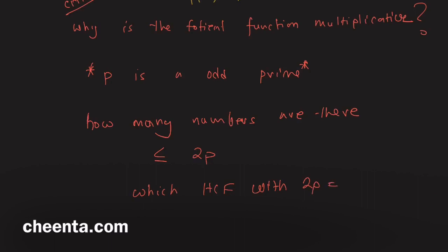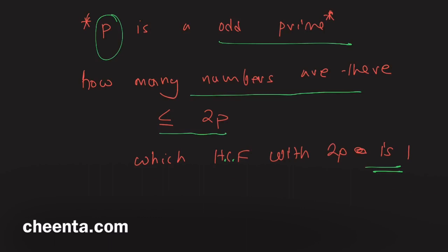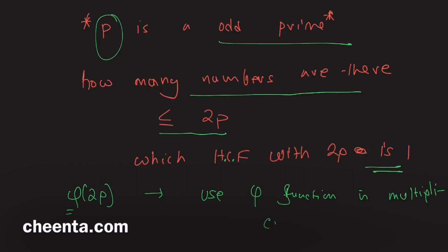The question asks: how many numbers less than or equal to 2p have HCF 1 with 2p? In other words, find φ(2p). You have to use the fact that the phi function is multiplicative. If you have the answer, post it in the comment section. Internal students should go to the Chinta classroom self-learning portal for part two. Full-time students will find this discussion in the number theory module live classes. Keep doing great mathematics and I'll see you in the next video.